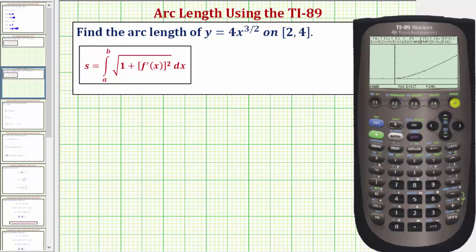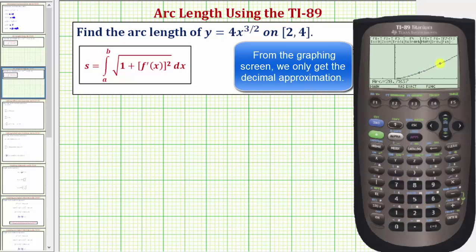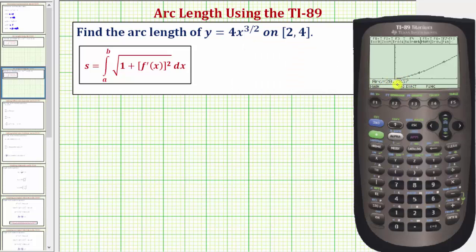Now that we have a nice graph of the function, we'll press F5 for math. We're going to arrow down and select option B for arc. So we can press B, or because I have B highlighted we can simply press enter. And now when it asks for the first point we enter x equals 2, so 2, enter. And the second point is when x equals 4, so we press 4, enter. And notice how there's two markers on the function indicating the arc length that we're finding, and it also gives the arc length here at the bottom, approximately 20.7837.